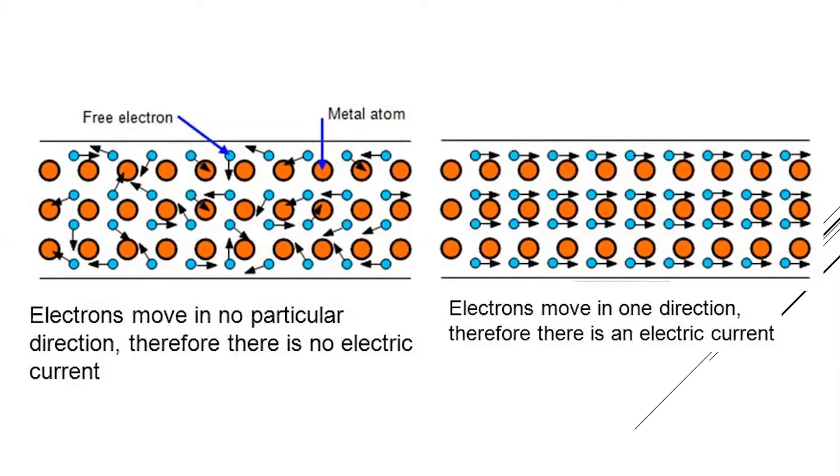But when the two ends of the metal are connected to a battery or a cell, then they start to flow. These electrons were already in the metal, right? But previously, they were not flowing. They were moving randomly. But now, they are flowing in a specific direction.